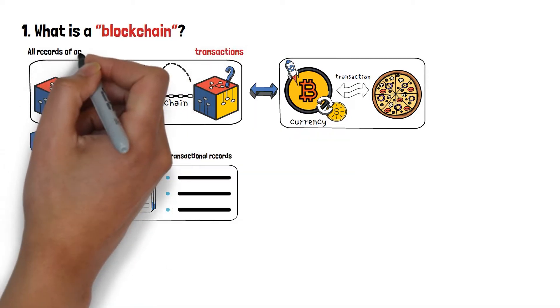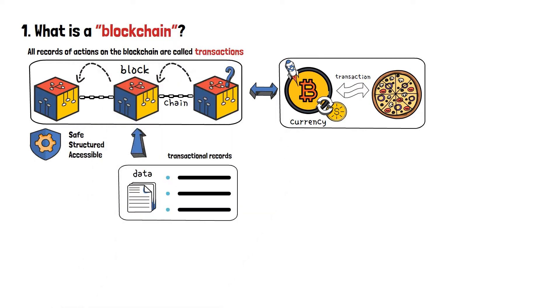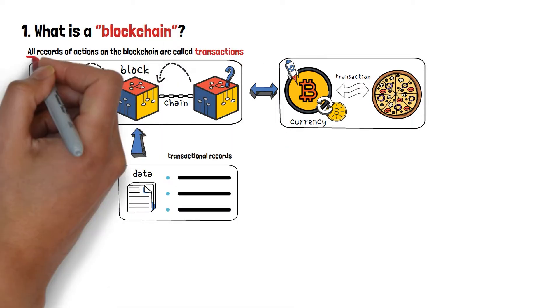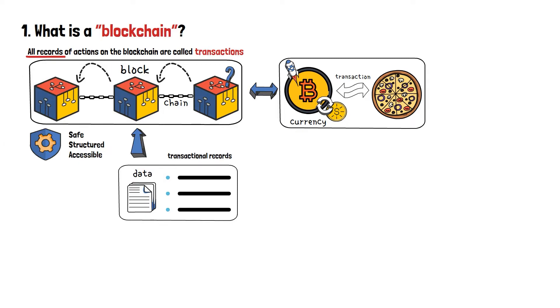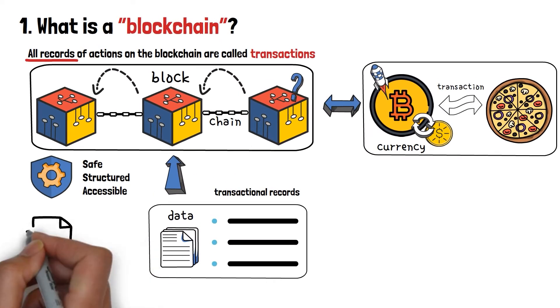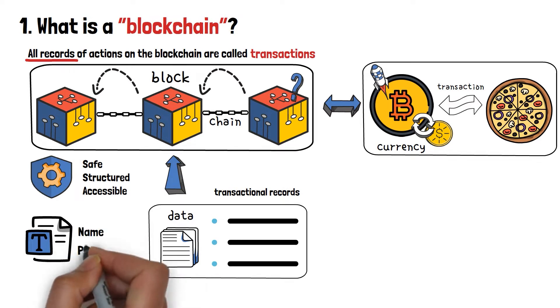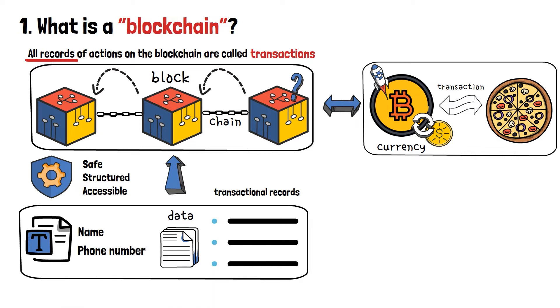Thus, all records of actions on the blockchain are called transactions, even if those actions are not related to any sort of cryptocurrencies or digital money anymore. For example, it can be a textual lock record of something that we want to store on a blockchain, let's say, your name or a phone number. And yes, we still call it a transaction record, because of the historic matter I just told you about.